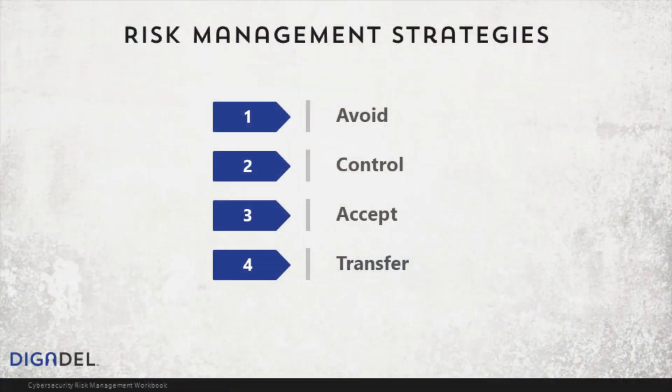The fourth strategy is transfer. The transfer strategy does not reduce the overall risk, but it does move ownership of the risk to another entity. This is typically done in the form of an insurance policy or cooperative. While it is fairly straightforward to purchase insurance for traditional risk categories, doing so for cyber risk can be a challenge due to its novelty and dynamics.